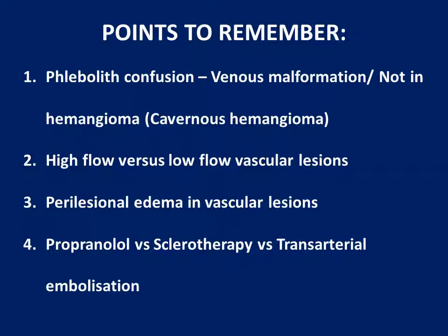Key points to remember: phleboliths indicate venous malformation, not hemangioma — the only exception is cavernous hemangioma, which is a misnomer and should be called low flow venous malformation. Second, classify vascular anomalies using the ISSVA classification — either high flow or low flow. Third, whenever there is a vascular tumor like hemangioma, look for perlesional edema; its presence should prompt consideration of more aggressive tumors such as rhabdomyosarcoma or fibrosarcoma. Finally, treatment depends on the correct diagnosis.